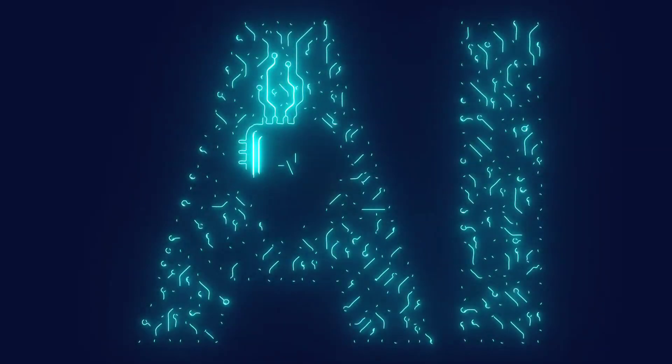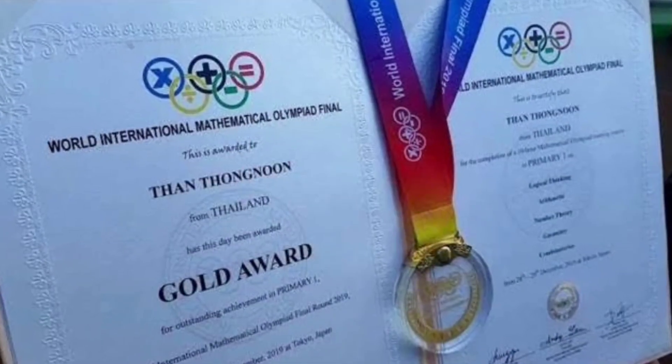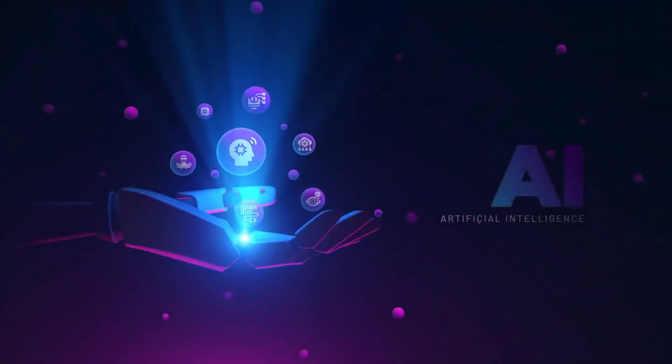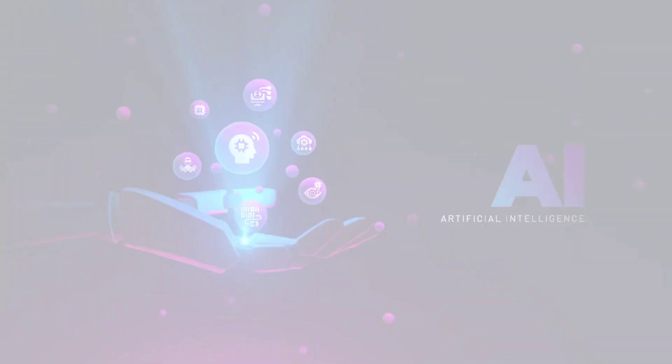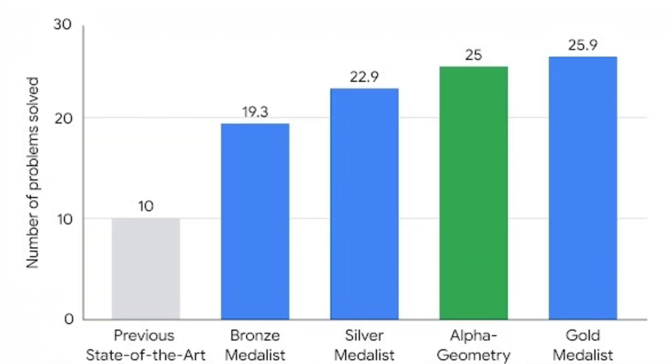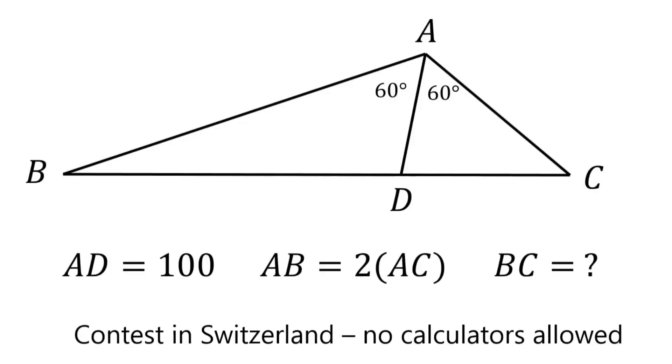Ever wondered if artificial intelligence could be as smart as a gold medalist in math? Well, today we have an AI system named Alpha Geometry that not only tackles tough geometry problems, but also rivals the skills of the brightest high school mathematicians in the world.